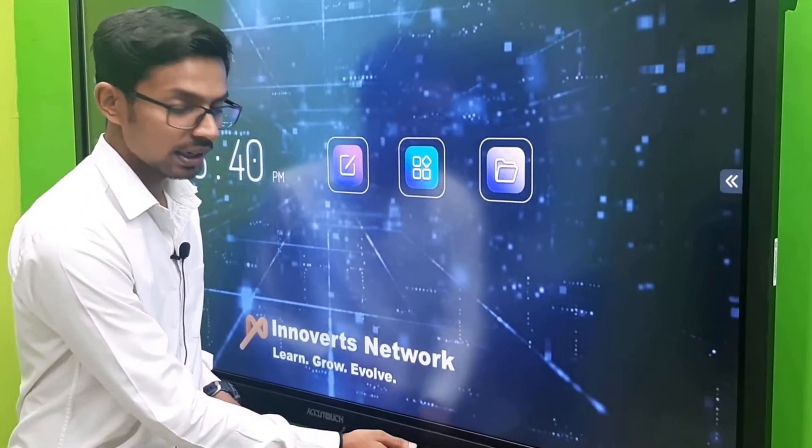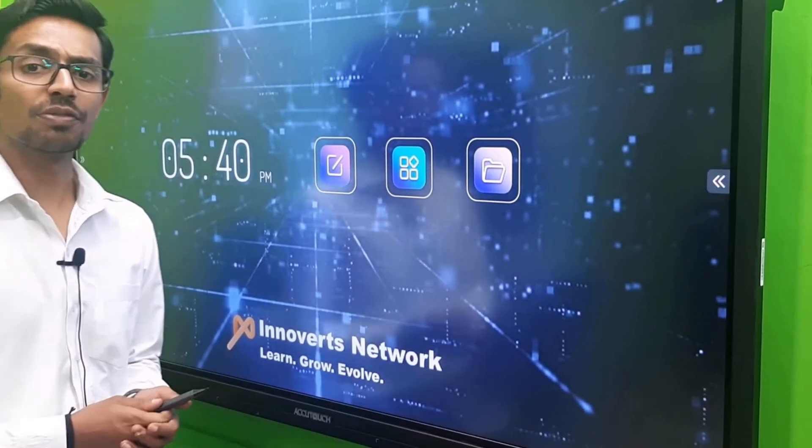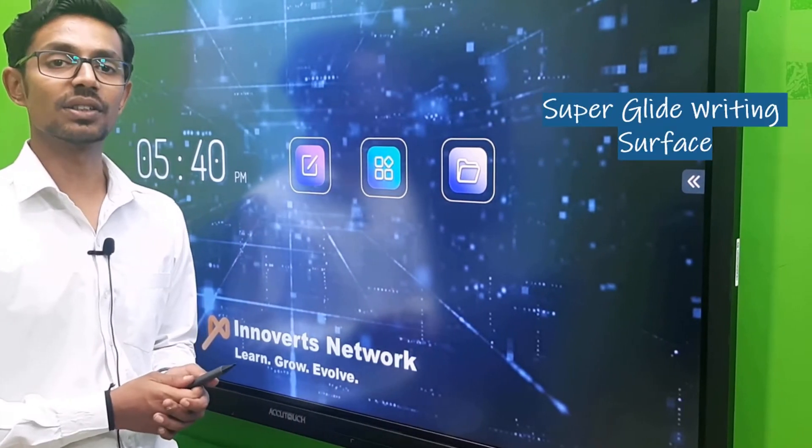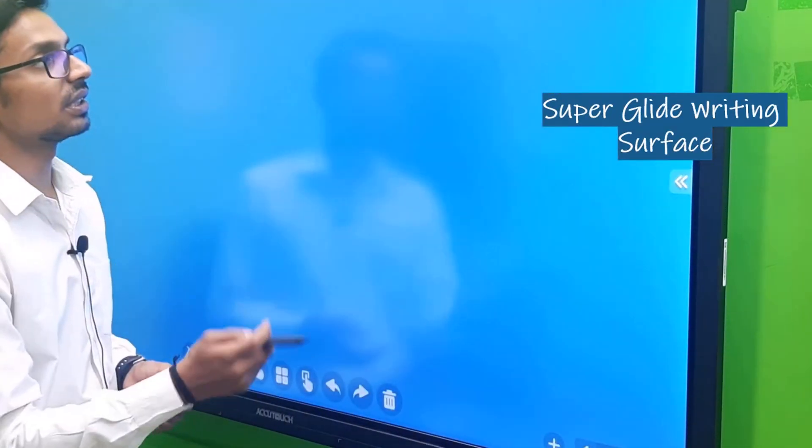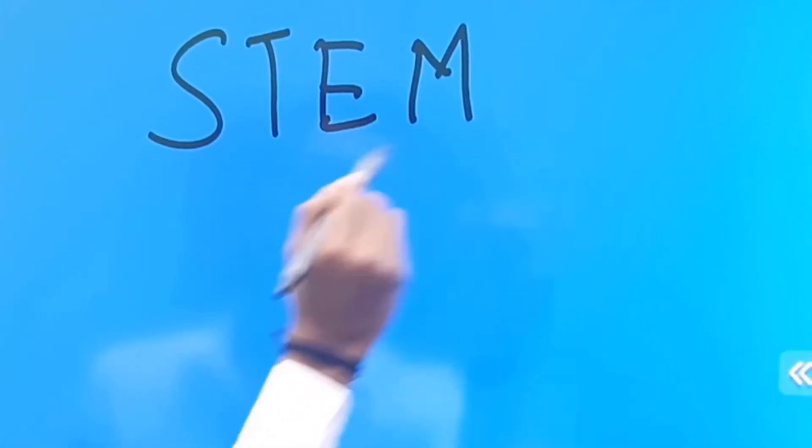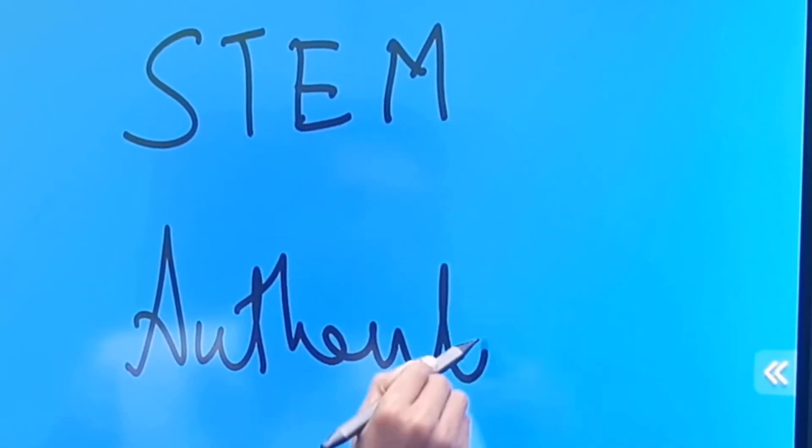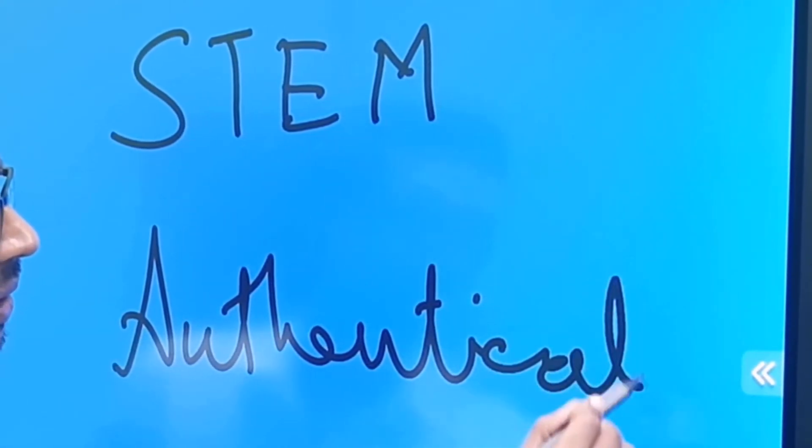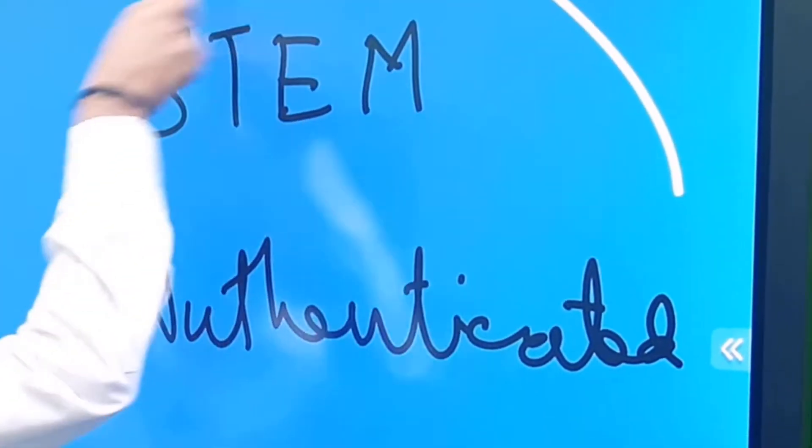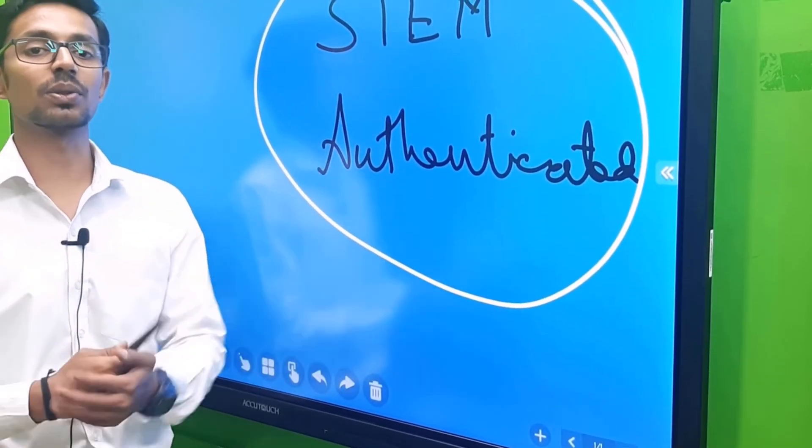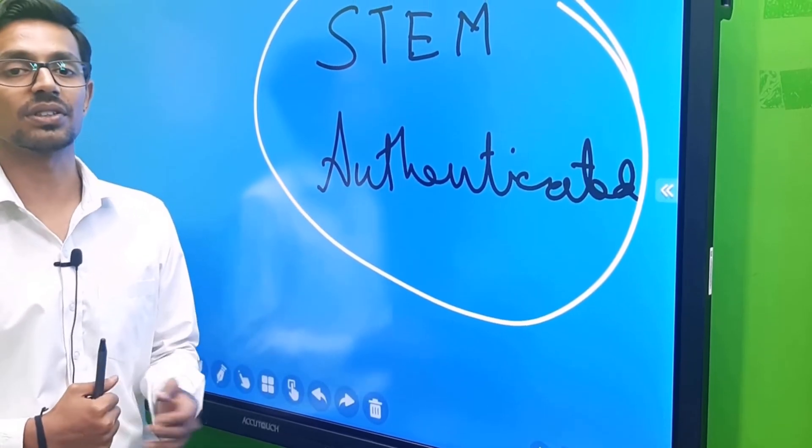Another important hardware feature about Acutouch interactive flat panel is its superglide writing surface. For example, you see the way I write on this, it's as smooth as writing on a piece of paper. This is very smooth and seamless to write on. This is a very interesting feature about the hardware of Acutouch.